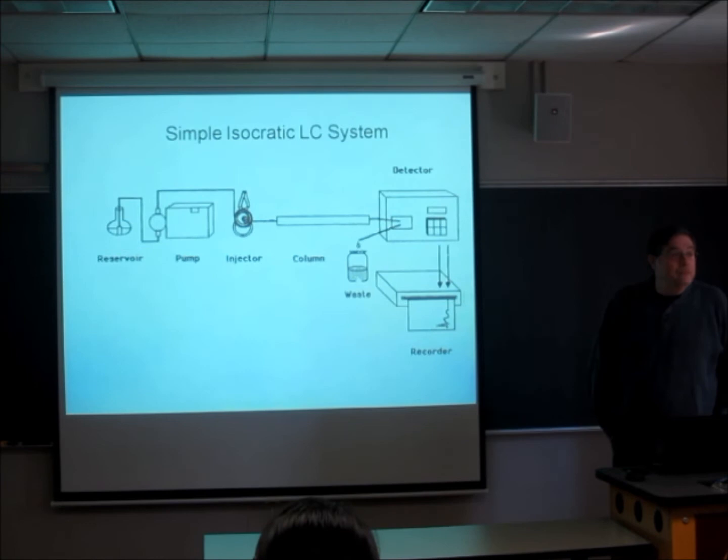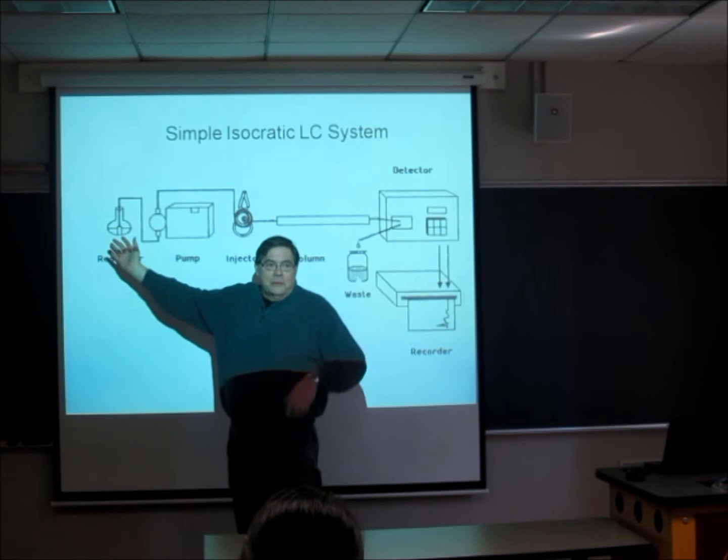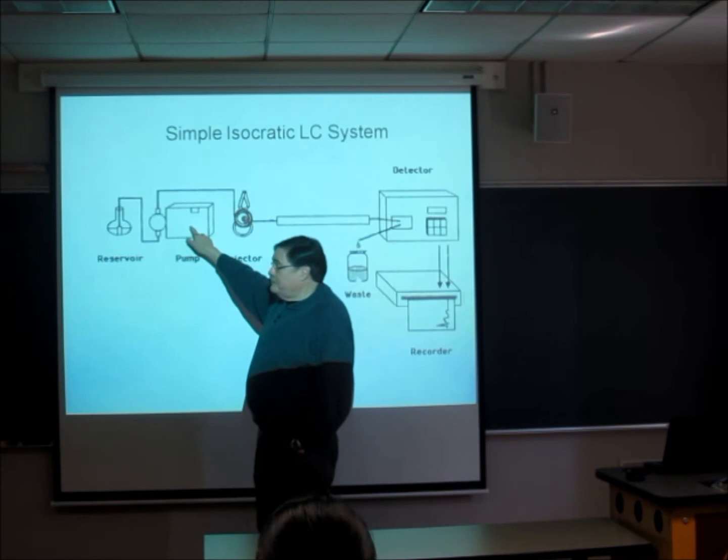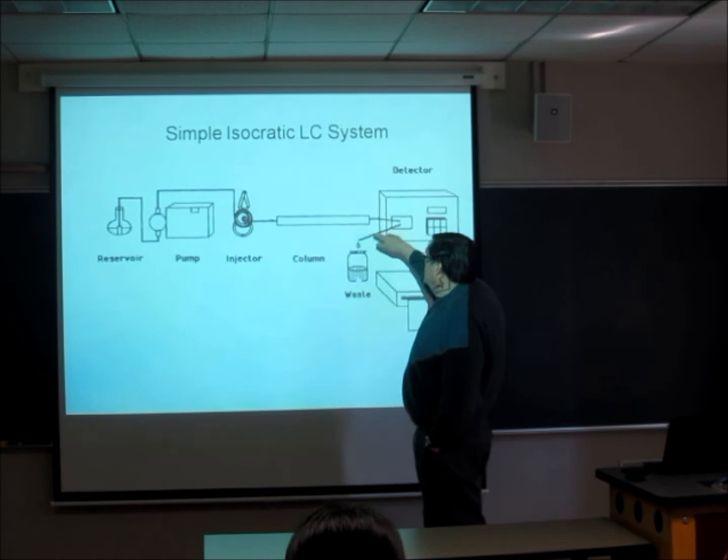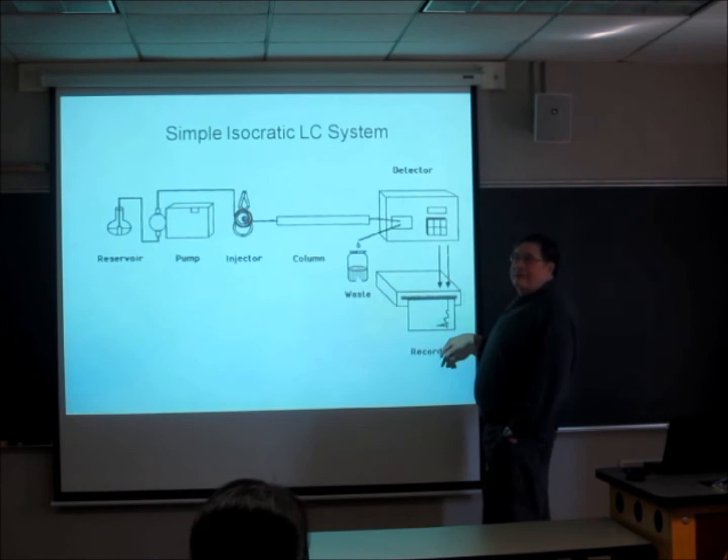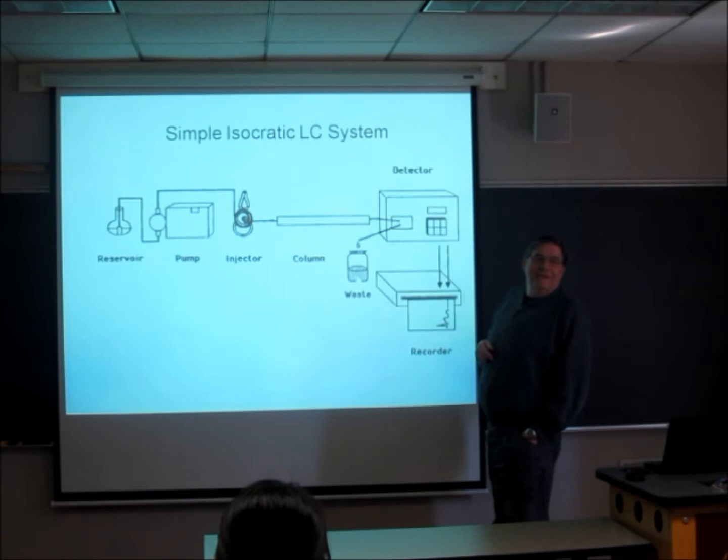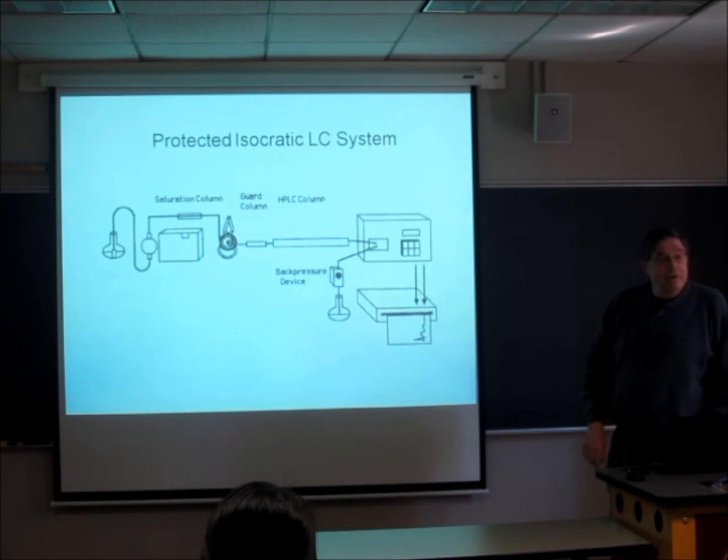Here's probably the oldest picture that Pete could find of a simple isocratic LC system. You can use mixed solvents. It doesn't have to be just water or just methyl alcohol. It can be something mixed up 50-50, something like that. Whatever it is, you don't change it. You take that solvent from the reservoir and you pull it with a pump and push it. Take it through an injection loop, then press the material through the column to a detector, to a waste container. The detector picks up a signal and back when this was a real good example, a strip chart recorder would take the detected signal.